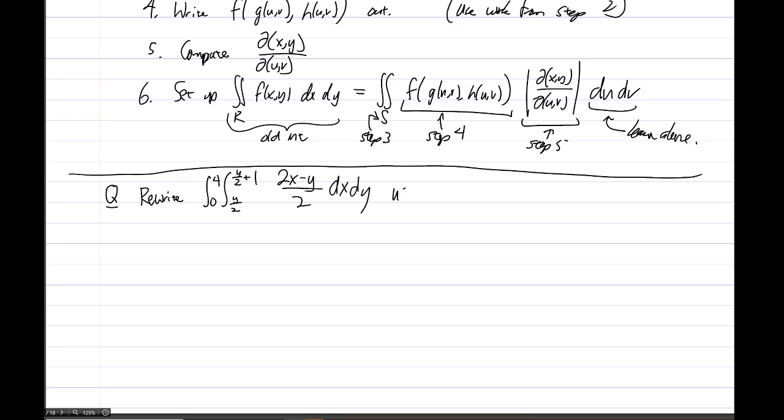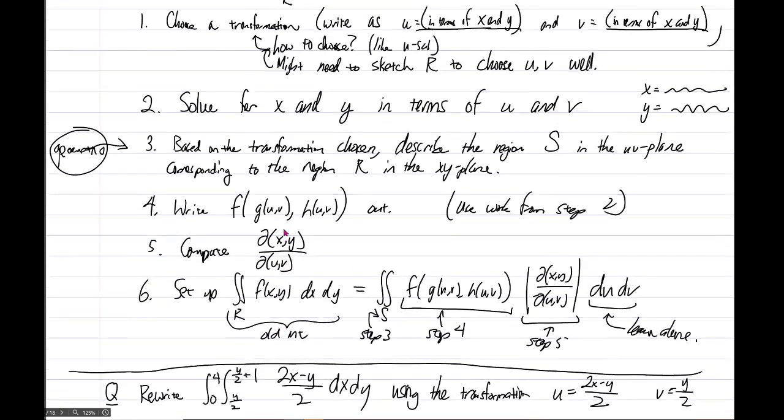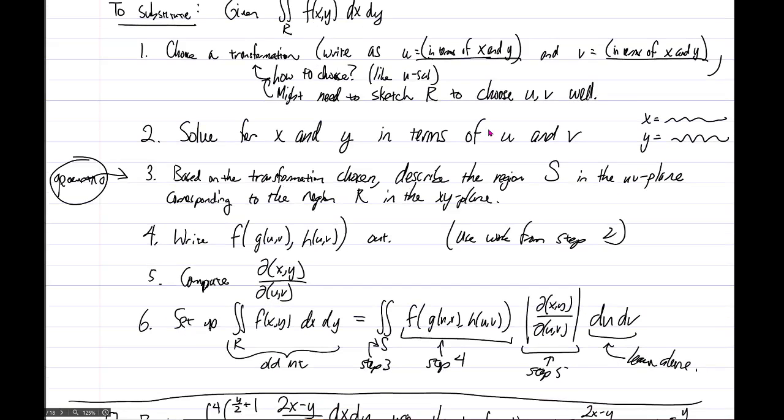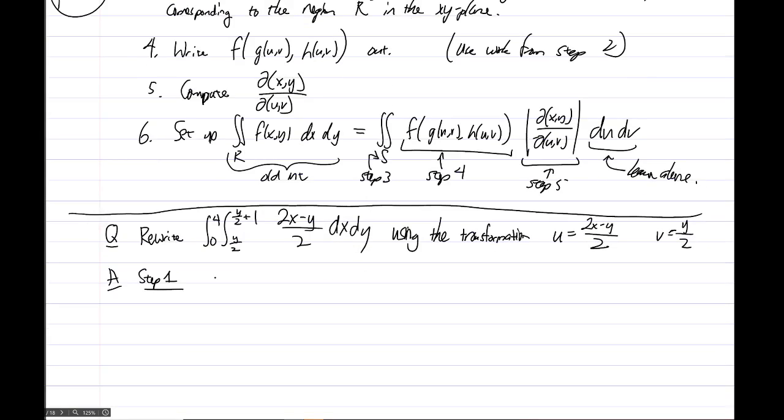We'll do this using the transformation u equals 2x minus y over 2 and v equals y over 2. So in doing this, step 1, if we go back and look, was to take the transformation, choose the transformation, and write it as u equals something, v equals something. How is the transformation chosen? It was just given to us. So given, right? Nothing to do for that step.